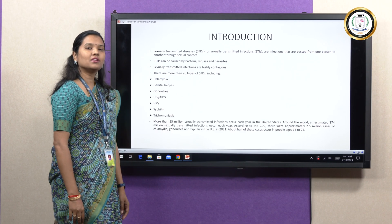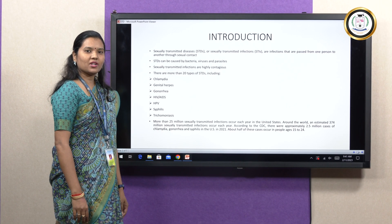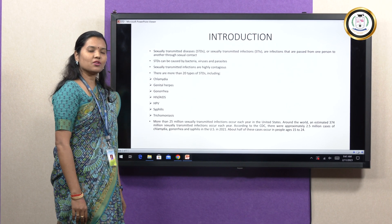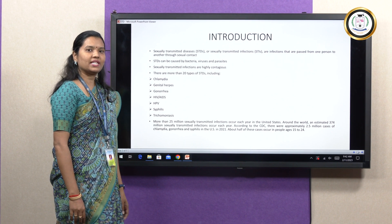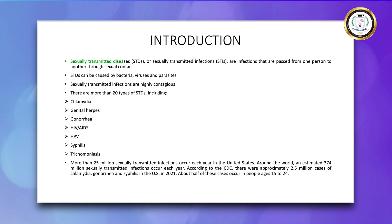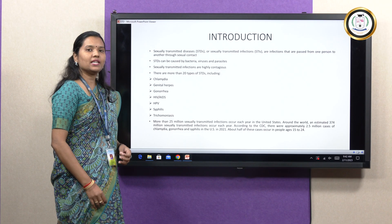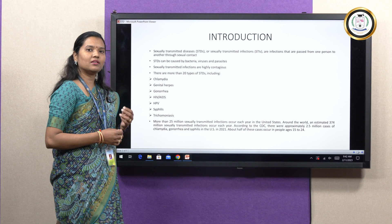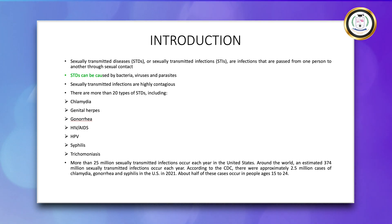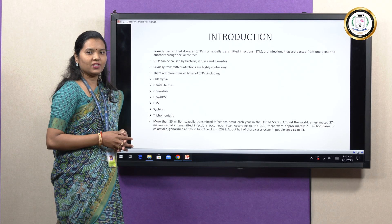We will first look into the introduction. Sexually transmitted diseases or sexually transmitted infections, STDs or STIs, are infections that spread from one person to another through sexual contact. They are spread by bacteria, viruses, or other parasites. They are highly contagious, which means they spread rapidly and effectively.